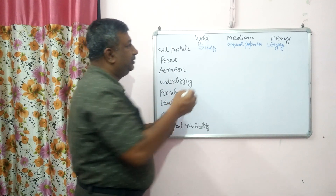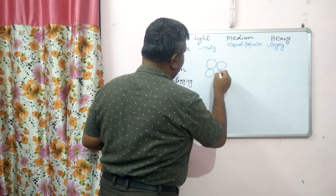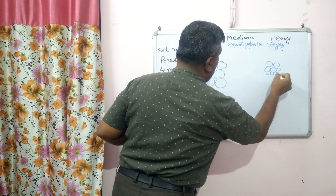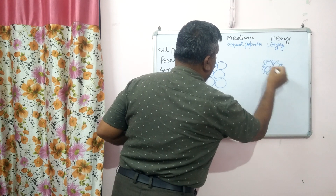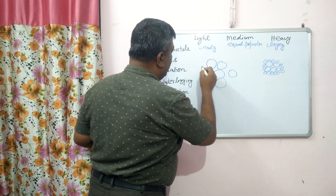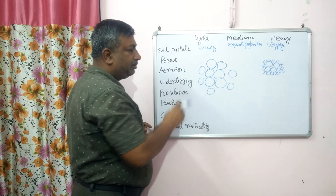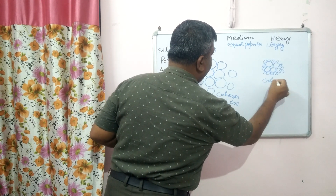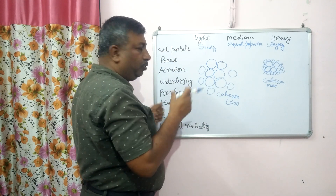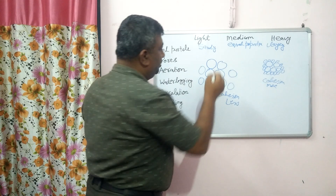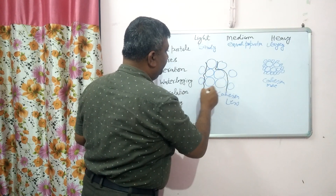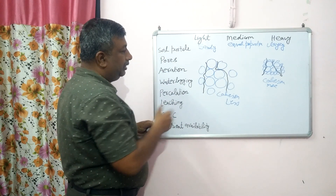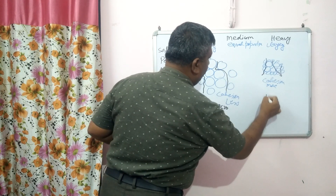In sandy soil the particle size is large, so particles are arranged far apart from each other. In clay soil particles are small and arranged very close to each other. Because cohesion force is less in sandy soil and more in clay soil, the pore space differs significantly — macro pores are more in sandy soil and micro pores are more in clay soil.